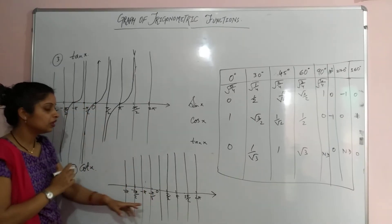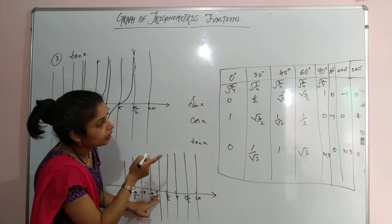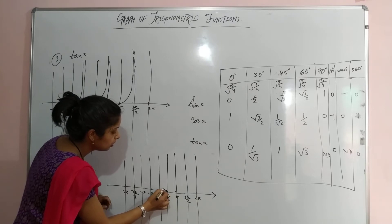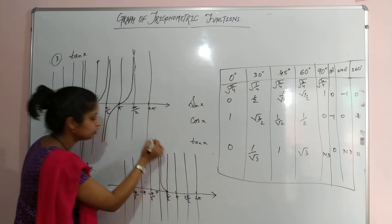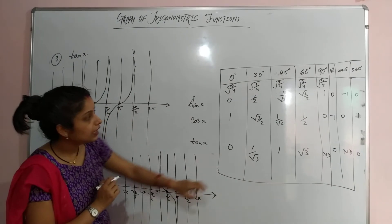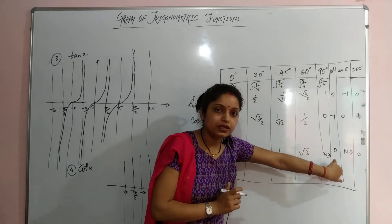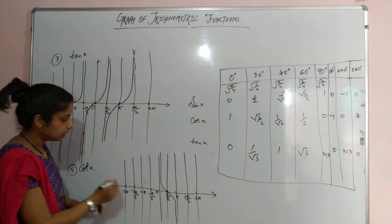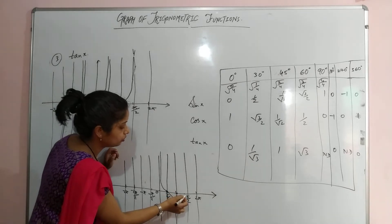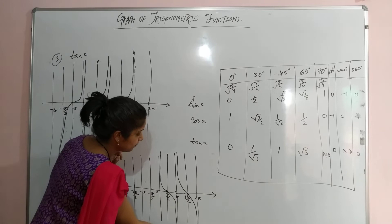At 0, cot is infinity, so the curve goes towards infinity there. At π/2, cot is 0, so the curve crosses zero here. Going further, at 180°, cot is again infinity. At 3π/2, cot is 0. This pattern continues, giving the cot graph its shape.